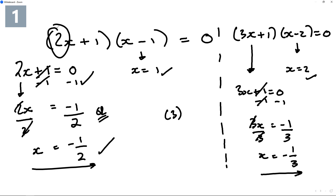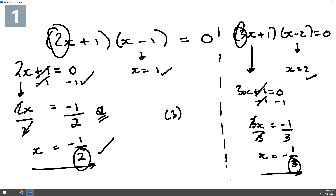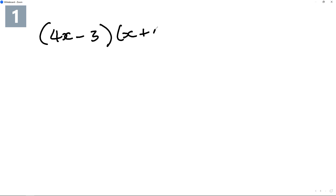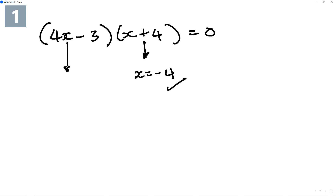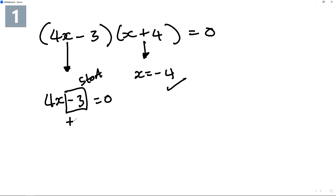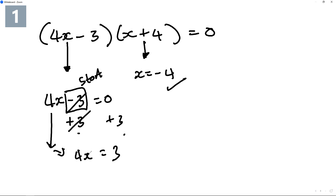Very similar — instead of 2 we now have 3 in front of x. Next: (4x - 3) and (x + 4) equals zero. The (x + 4) bracket is straightforward — opposite sign, x equals negative 4. For 4x - 3: write it equal to zero, add 3 on both sides because that makes it zero, giving 4x equals 3, then divide both sides by 4 to get x equals three over four.